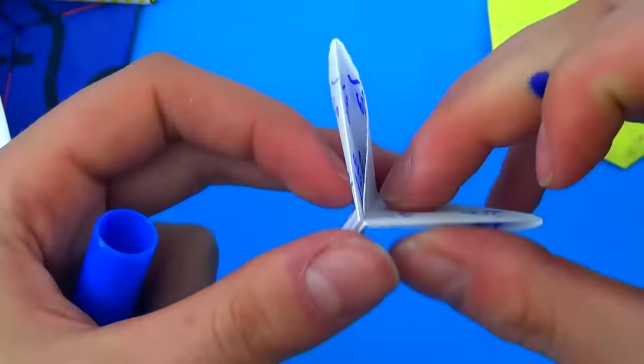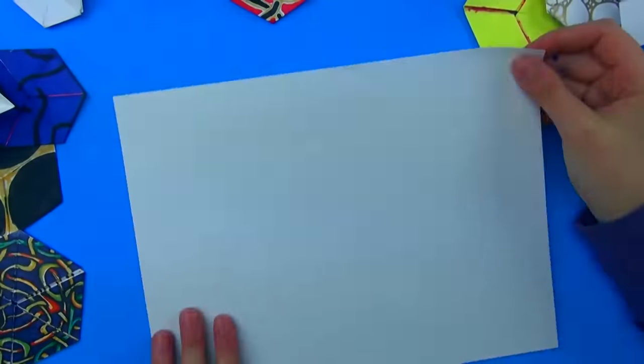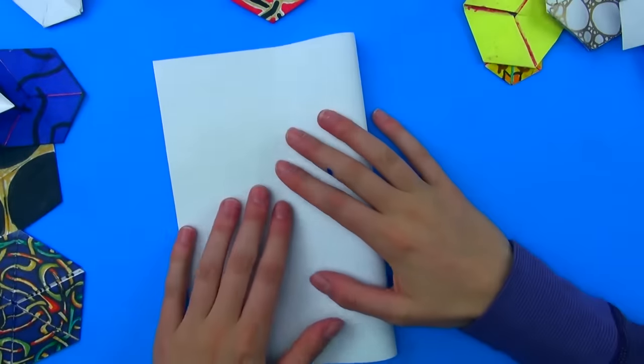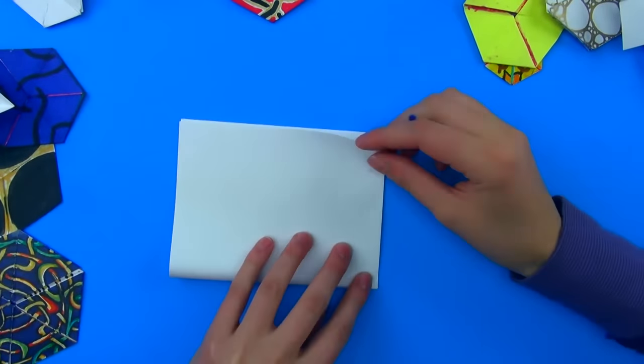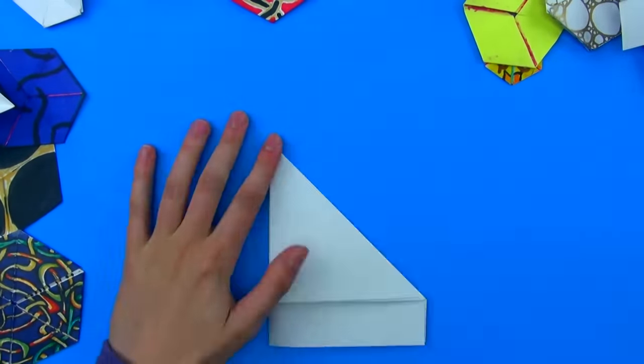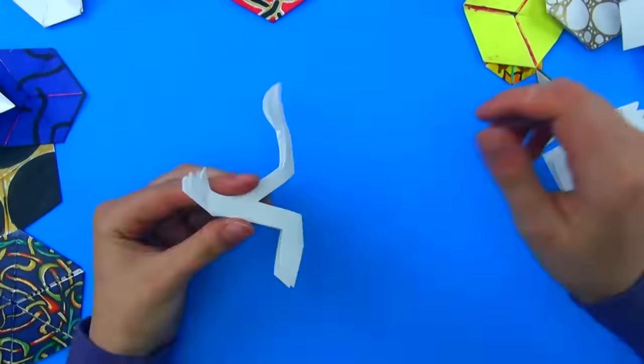And that reminds you of a trick you learned for folding paper snowflakes. See, the easy but inaccurate way to fold paper snowflakes has you fold paper in half, then in half again, and in half again, and then you cut it and unfold it and you've got a snowflakey looking thing.